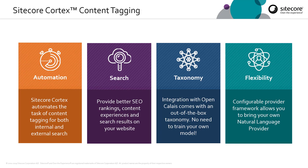Sitecore Cortex automates the task of content tagging for both internal and external search. By default, a provider connecting to the Open Calais service gives you a quick start to using content tagging, providing a full taxonomy out of the box. The provider framework is also fully configurable so you can customize it to use your own business logic or your own natural language provider instead.